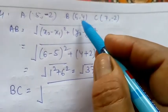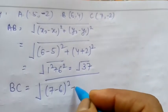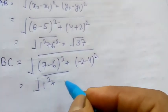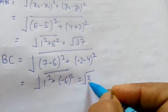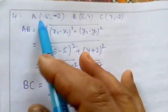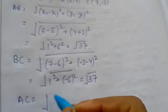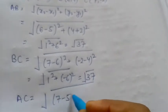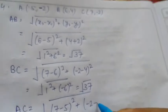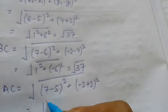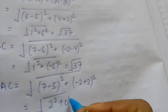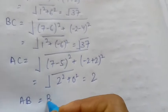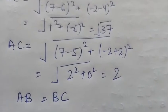Next, finding side BC: (7 minus 6) whole square plus (minus 2 minus 4) whole square gives 1 squared plus minus 6 whole square, which is also root 37. So AB equals BC. Then checking AC: (7 minus 5) whole square plus (minus 2 plus 2) whole square gives 2 squared plus 0, which is 2 units. Since AB equals BC but AC is different, these are the sides of an isosceles triangle.